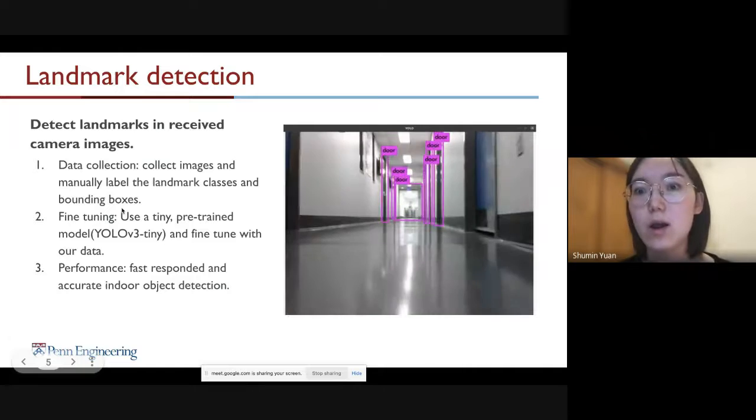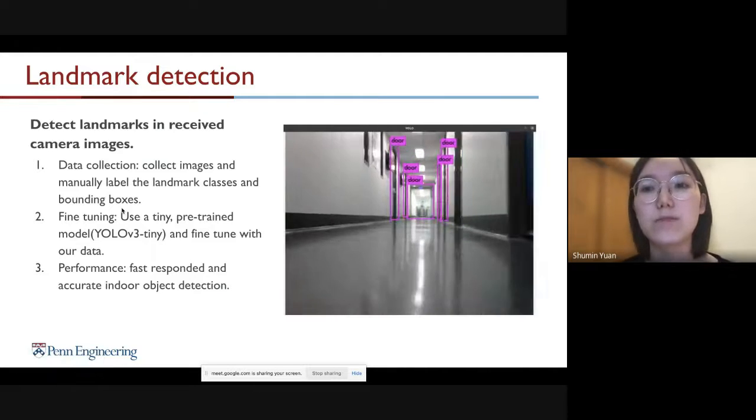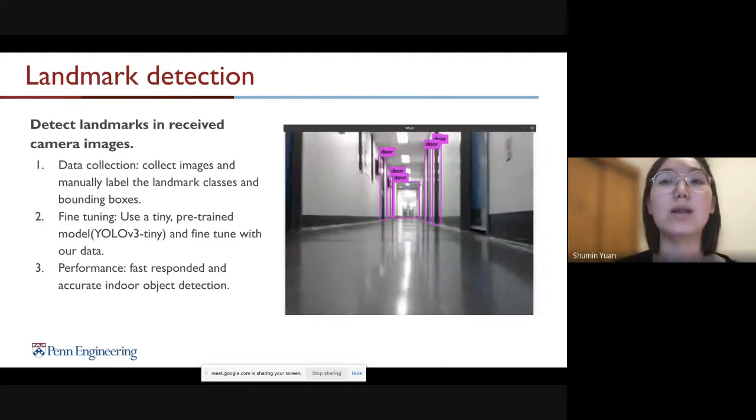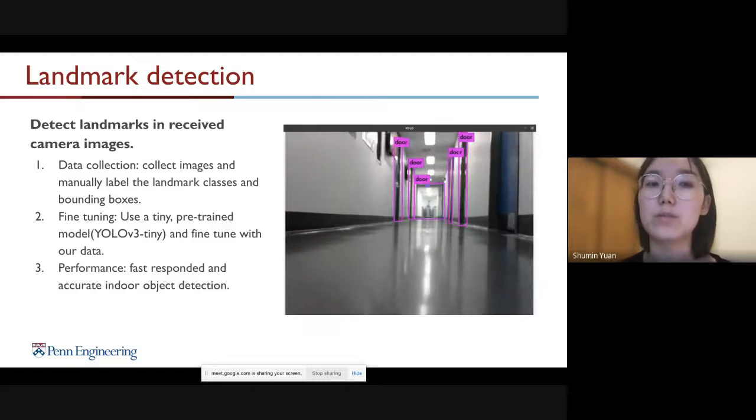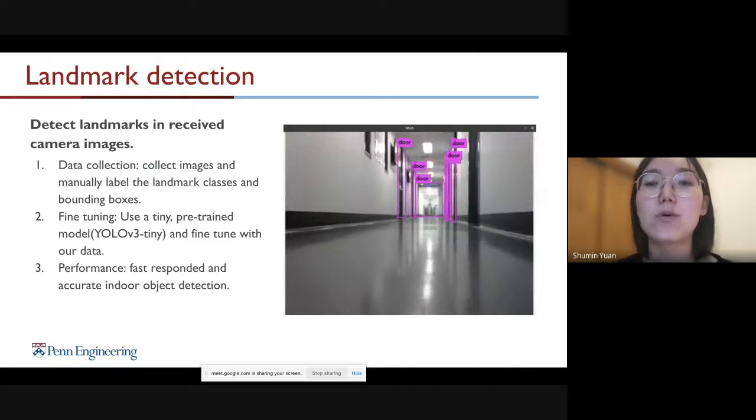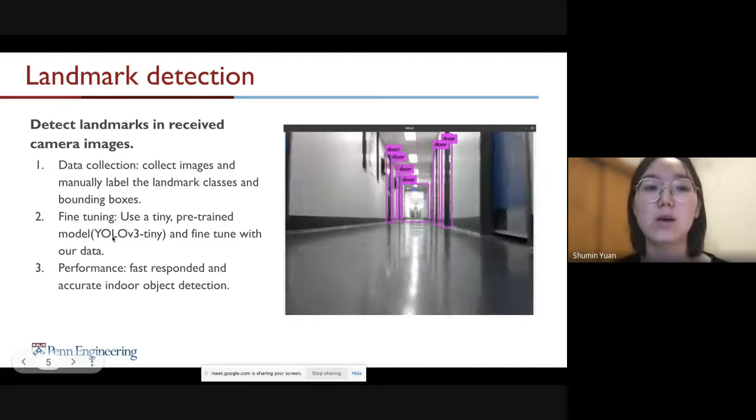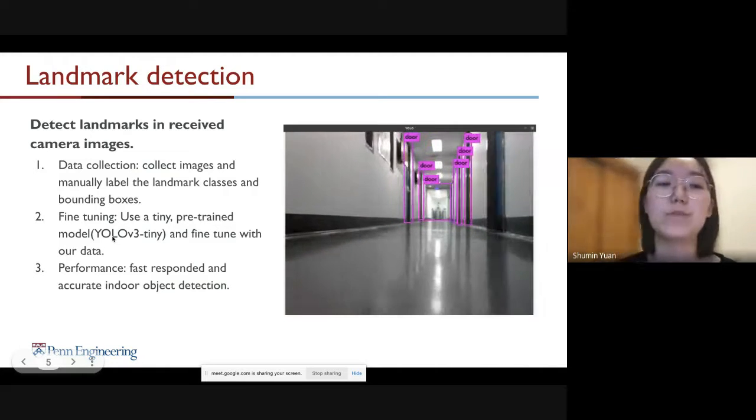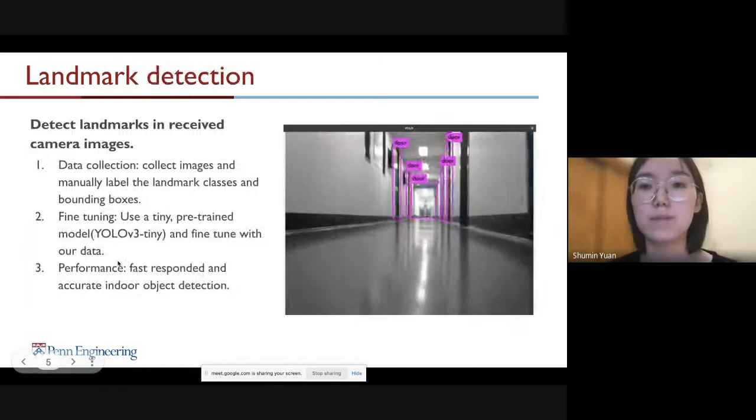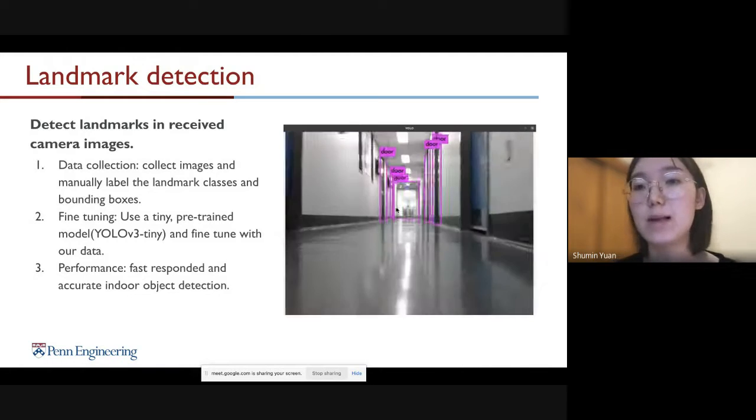First, we need to collect our own data because the indoor environment is very different from the outdoor environment where we can get data sets from online, and those data sets are usually taken from human perspective. So we need to manually collect and label our data and use that to do fine tuning of the YOLO model. Then we can see that using this fine-tuned model, we can achieve real-time landmark detection.